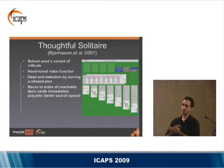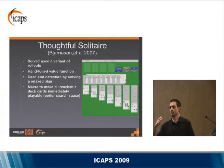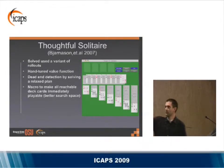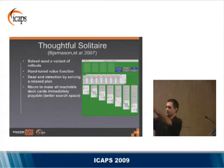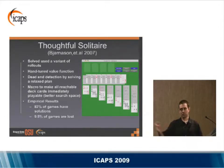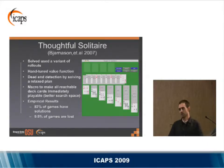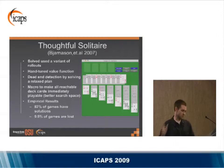We took this as a starting point and published a paper where we did a variant of their nested rollout algorithm. We added dead-end detection by solving a relaxed plan of the game, and implemented a macro so that if you could reach a card in the deck, you could just play it directly. Our results showed a policy winning about 2% of games, and with relaxed-plan dead-end detection we showed 9.5% of games are lost — bringing the unaccounted games down to about 10%.